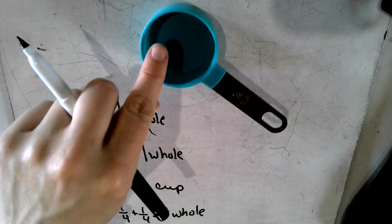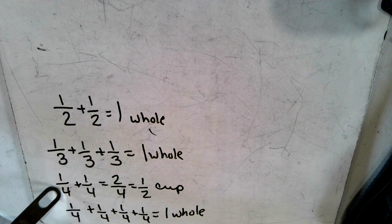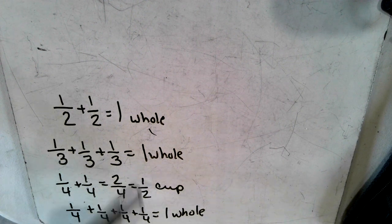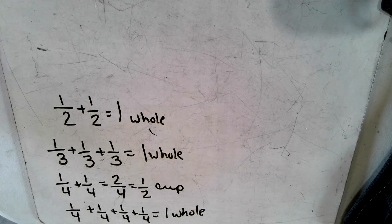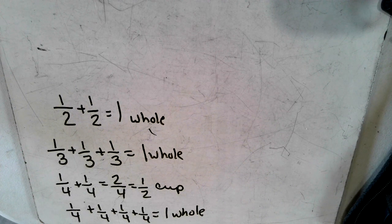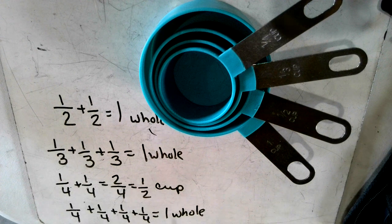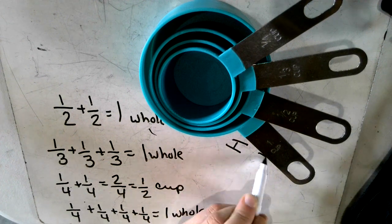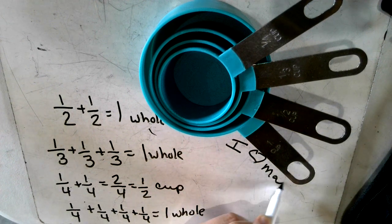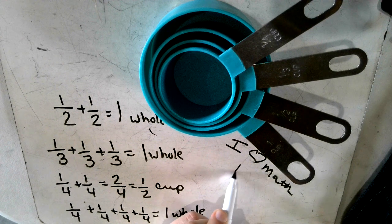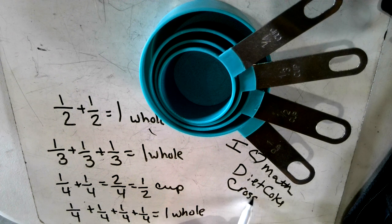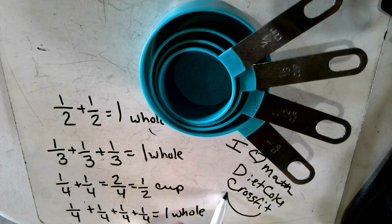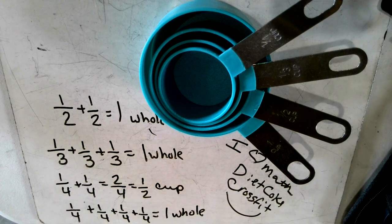Because one fourth plus one fourth equals a half. That is my version of measuring cups. And as always, this is Miss Bobby and I love math, diet coke, CrossFit, and I miss all my students.